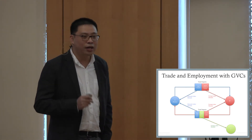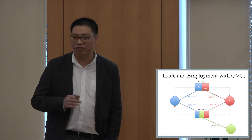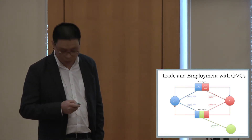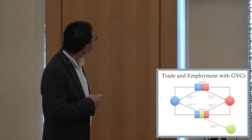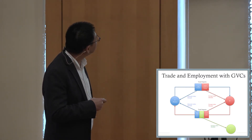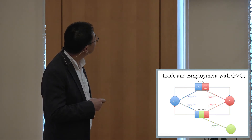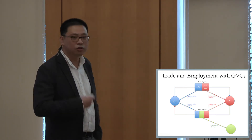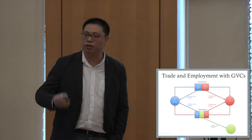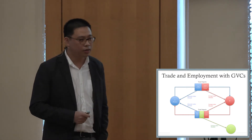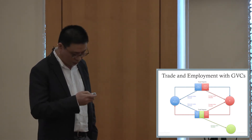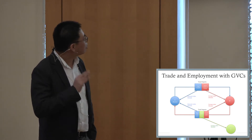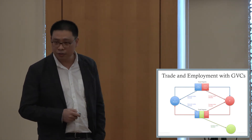Essentially, with global value chains a country's trade can be decomposed into five different components: final export, final import, import content of export, export content of import, and third-party bilateral trade. Each country's export can be decomposed into these five parts.